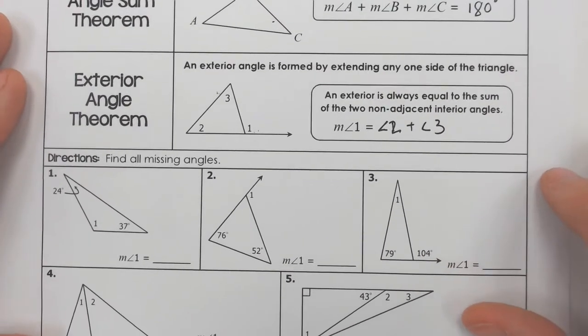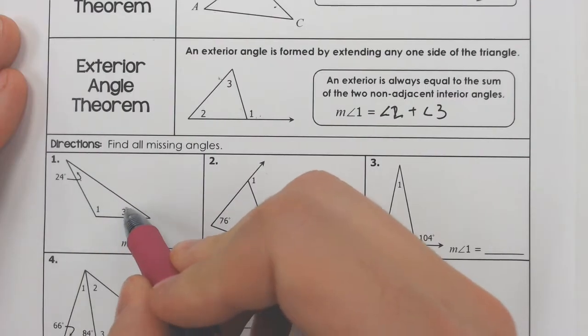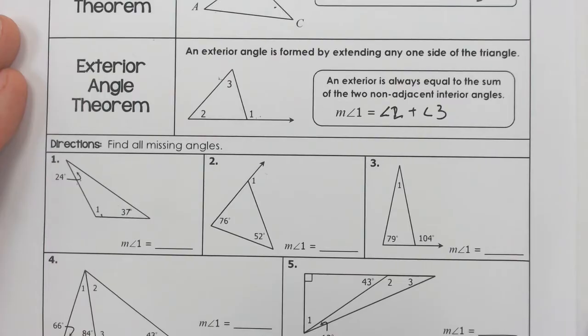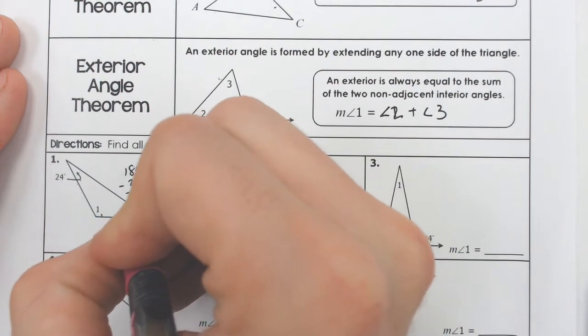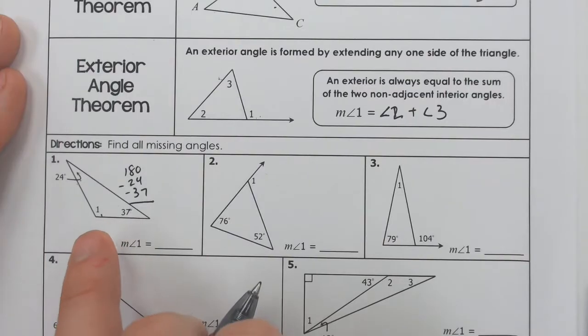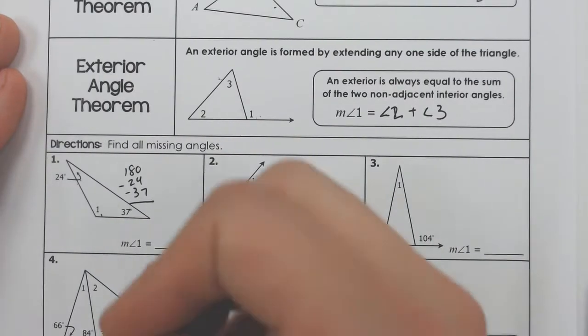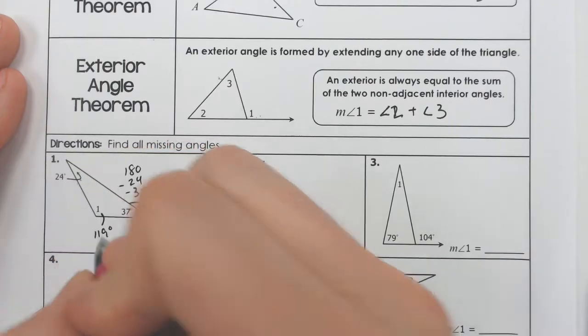We're going to try a few simple problems at first, and then we're going to get a little more complicated. So this first problem, we just have two angles and we want to find the third. Well, three angles in a triangle add to equal 180. So all we have to do is take 180 and take away the 24 and the 37. So I'm going to take 180 and take away 24 and 37. And when I do that, I get 119. So apparently this angle right here is 119 degrees.